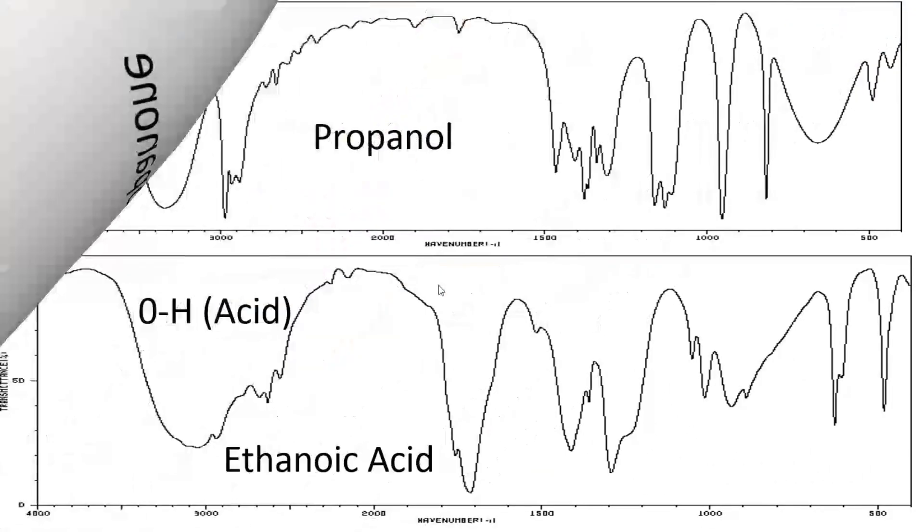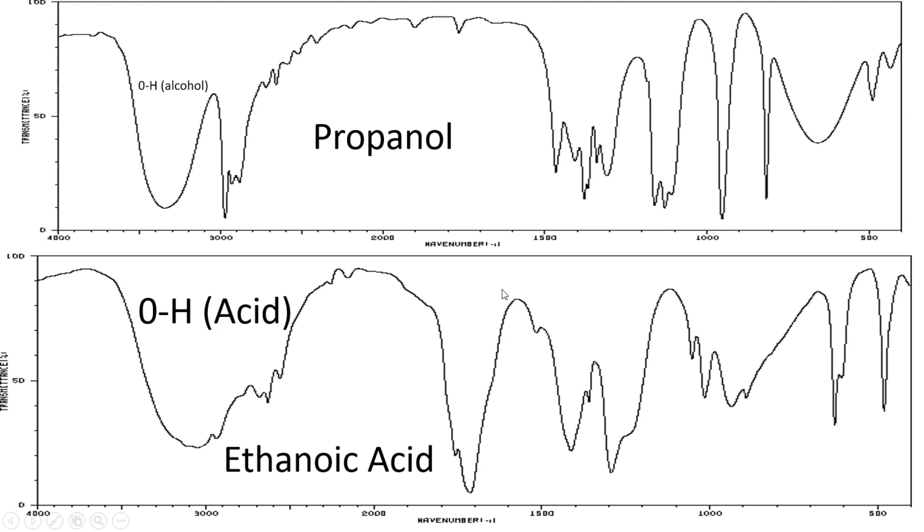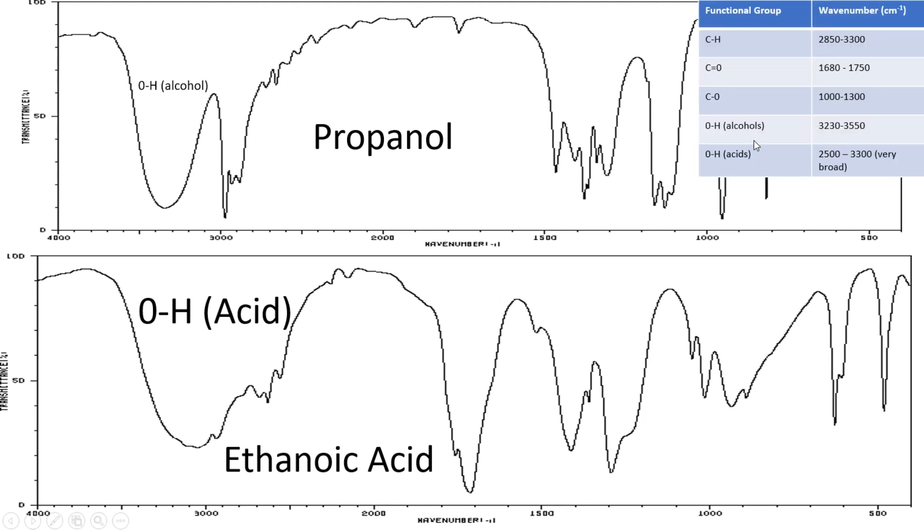Now let's look at another example where we can actually use this fact where you've got the alcohol being narrow and the acid being very wide. You can see in your ethanoic acid that you have a very wide peak, whereas on your propanol, which is your alcohol, you have a very narrow peak. So you can actually tell different substances apart very quickly.